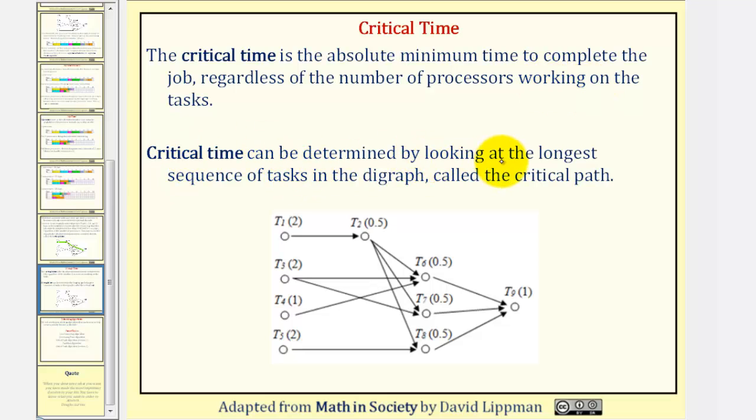Critical time can be determined by looking at the longest sequence of tasks in the digraph, called the critical path. We already pointed out that this path gives a total of four days. No other path will be longer than four days. For example, if we took this path here, notice how this would be two plus 0.5 plus one, that's 3.5. And since four is longer, four is your critical time.